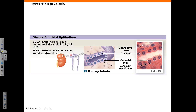Simple cuboidal epithelium consists of a single layer of cells that look like squares in cross-section. This tissue provides limited protection and is found in regions that take part in secretion and/or absorption, such as the kidney tubules, the thyroid gland, and other glands and ducts. Here is an example from a kidney tubule. Note the apical or free edge, the basal surface connected to the basement membrane, and the large purple-stained nucleus in the center of the cell.